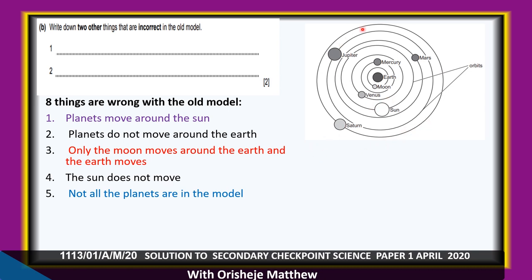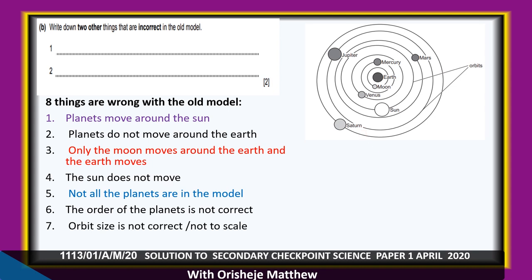A few planets are missing. The order of the planets is not correct. The orbit size is not correct — it is not drawn to scale.